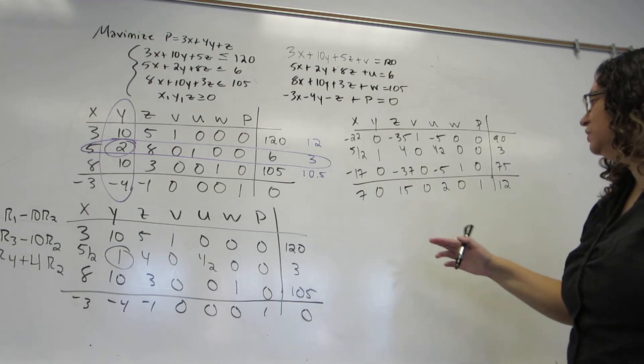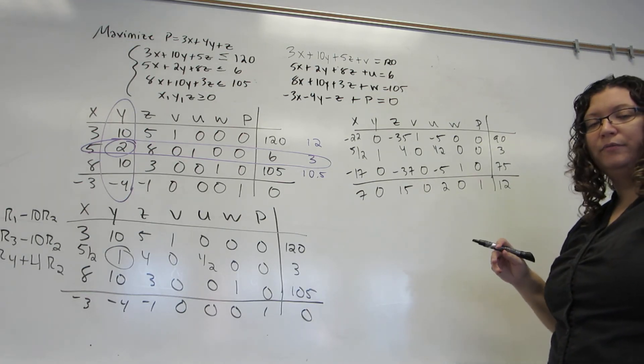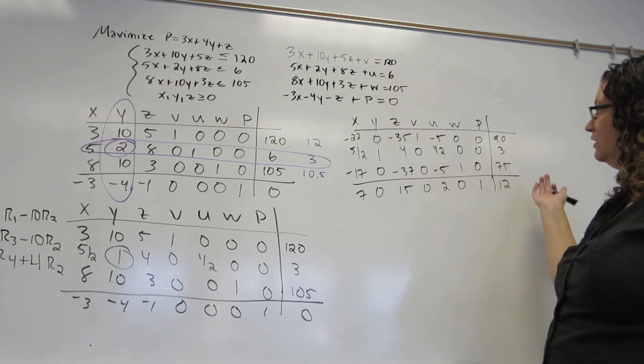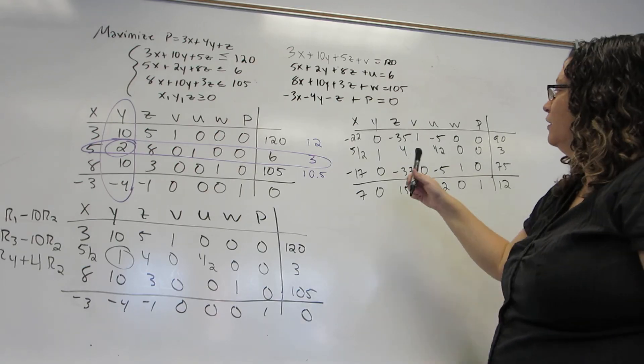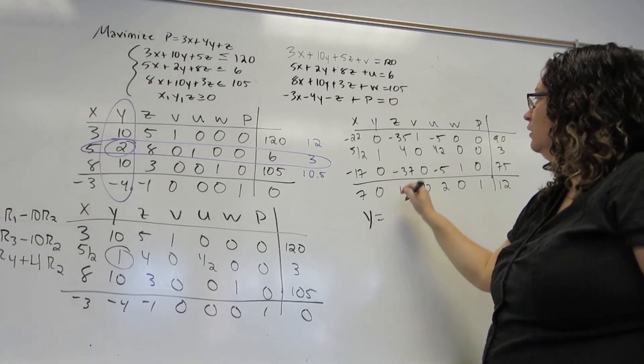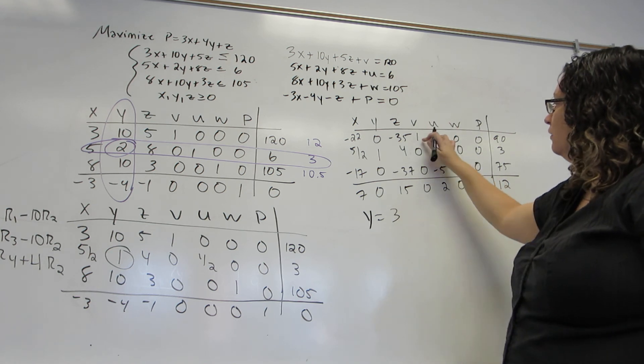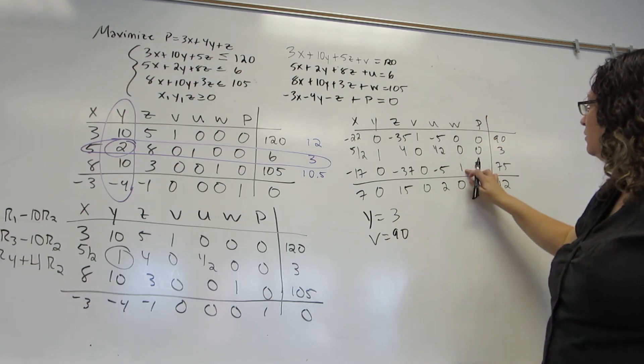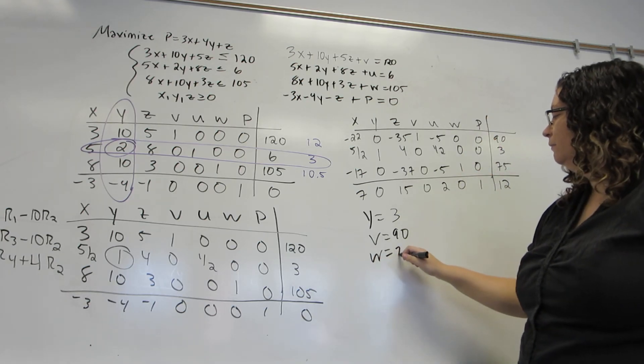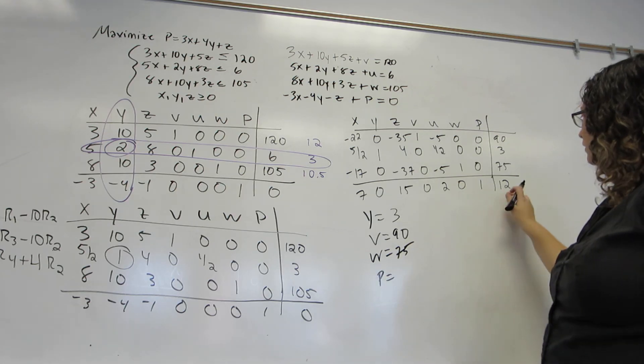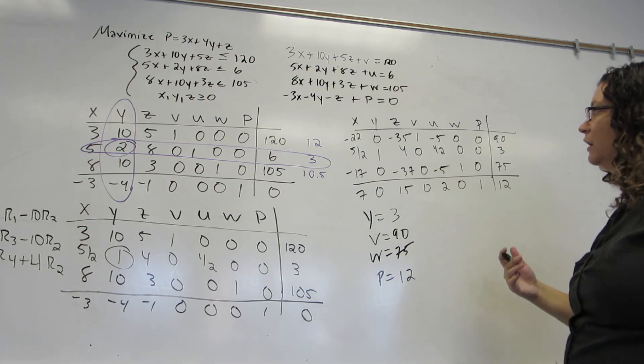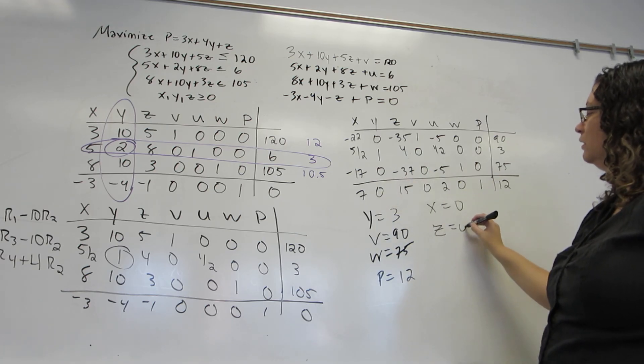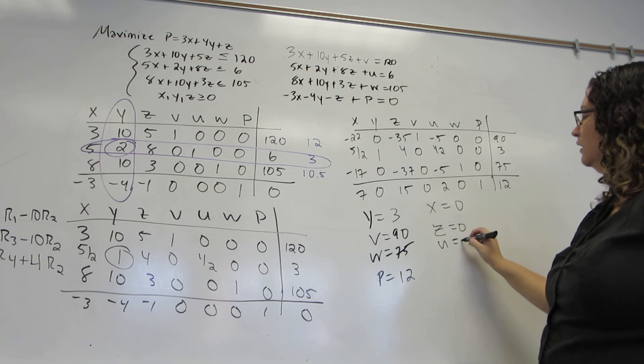Now, I attempt to start again, but there are no negative numbers left on the bottom row, which means I'm actually done. Every column that has just a single one in zeros is going to give me a value of a variable. So Y will equal 3, V will equal 90, W will equal 75, and P will equal 12. The other variables that don't have the unit column become zero. So X is zero, Z is zero, and U is zero.